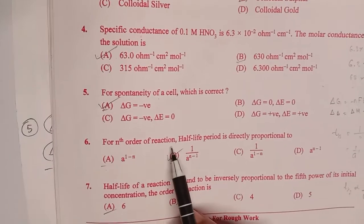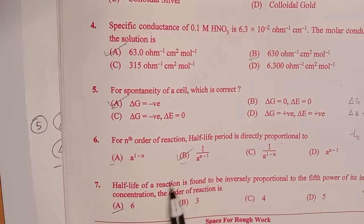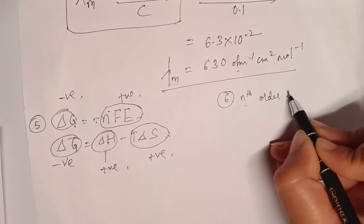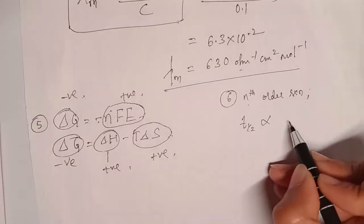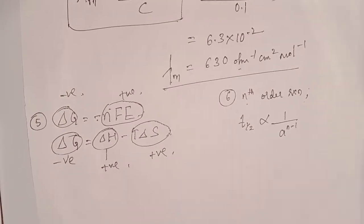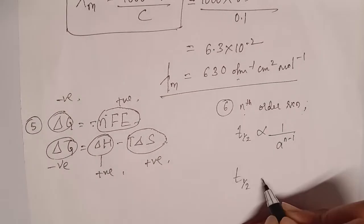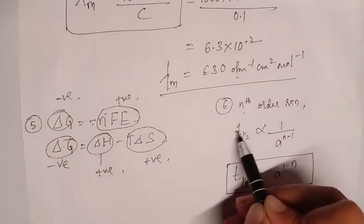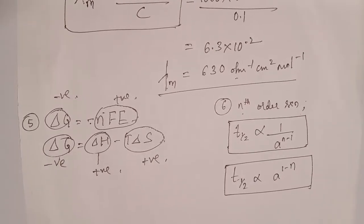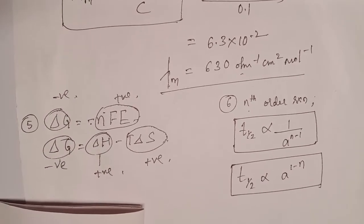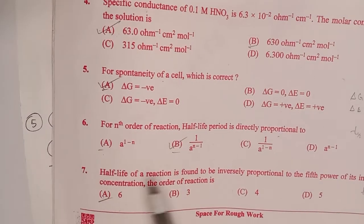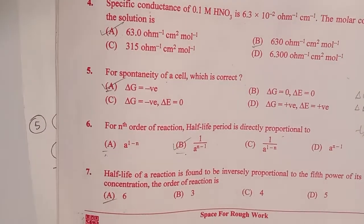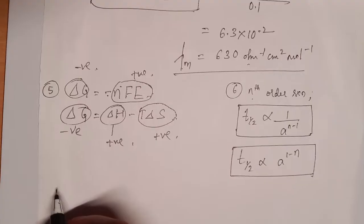Sixth question: for an nth order reaction, half-life period is directly proportional to — for an nth order reaction, T_half is directly proportional to 1 divided by A to the power (n minus 1), or equivalently T_half is directly proportional to A to the power (1 minus n). These are the only two relations between T_half and order of reaction. This question awarded marks to both students who answered A or B.